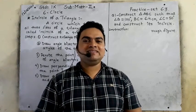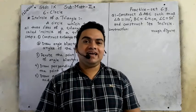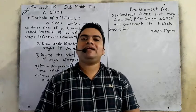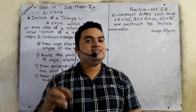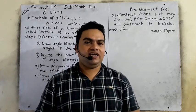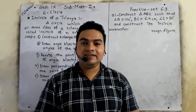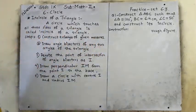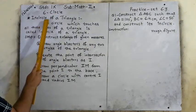Hello everyone, this is Imran Pardisi sir and today I will be teaching you the new topic of standard 9th math, chapter number 6, practice set 6.3. Today we will see how to construct an incircle of a triangle and circumcircle of a triangle. Please look at the board. Chapter number 6: circle. Today's topic is incircle of a triangle.